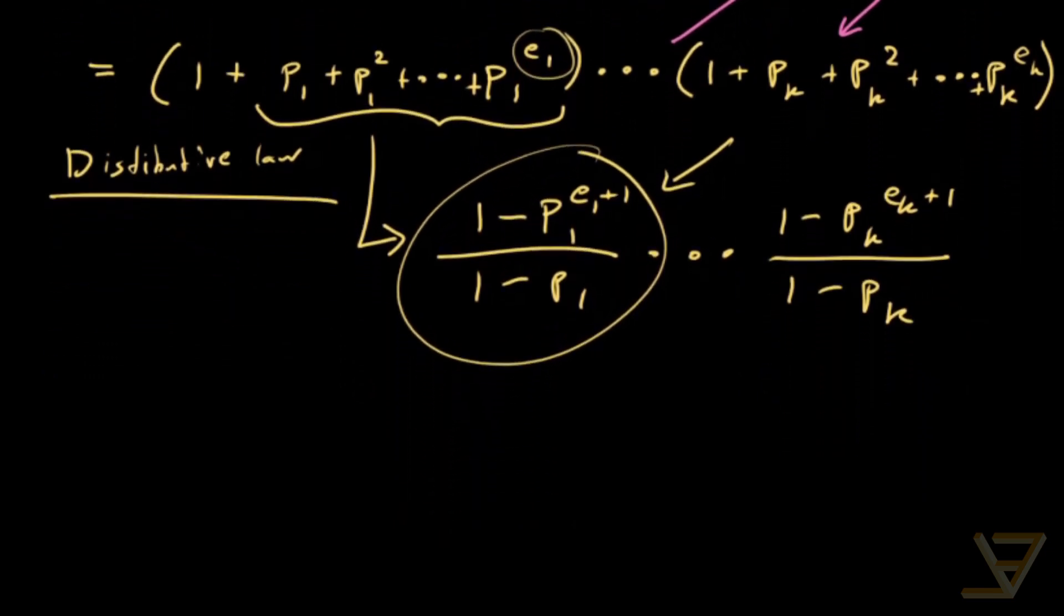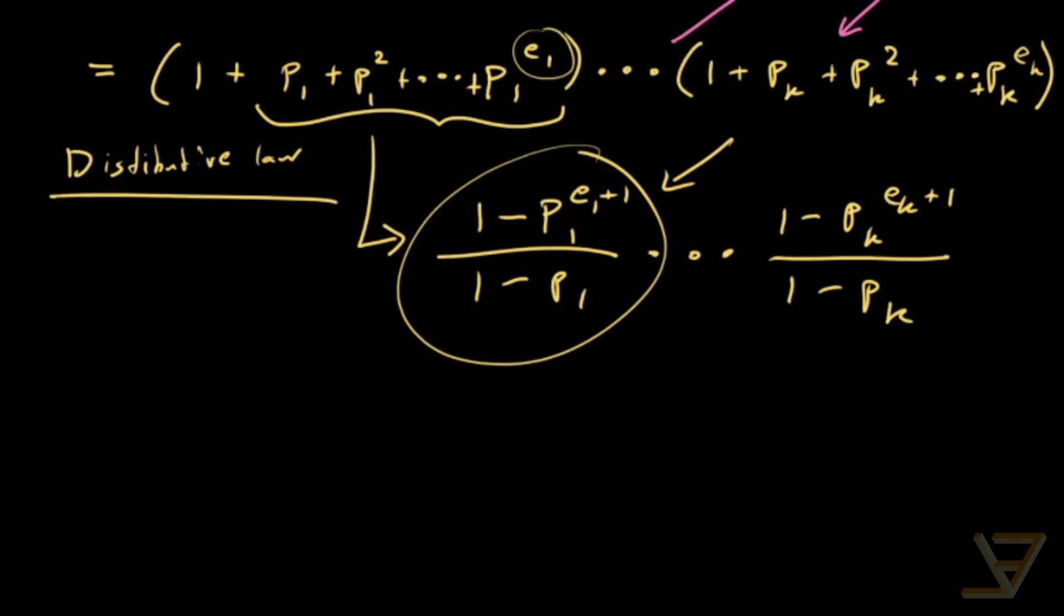So before we end, let's do an example. Let's say we have n is equal to 12, and that means that 12 is equal to 2 squared times 3.